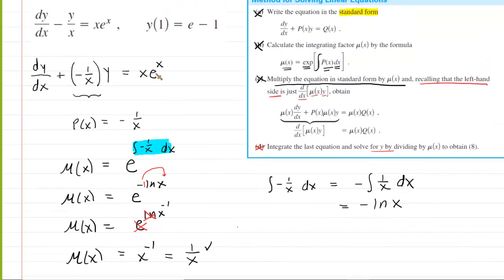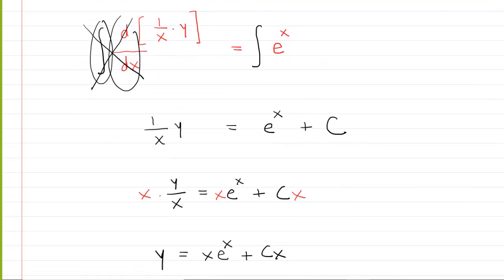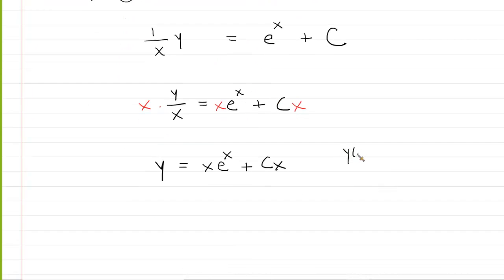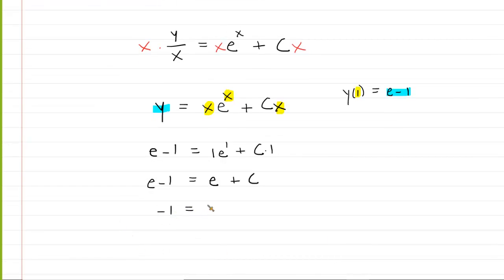They tell us that y of 1 is equal to e minus 1. So what that means is you're going to be plugging 1 in for x, and you're going to be plugging e minus 1 in for y. We'll plug in the initial condition: e minus 1 equals 1 times e to the 1 plus c times 1. So it's really just e plus c. And if you subtract e from both sides of this equation, you would see that c is equal to negative 1.